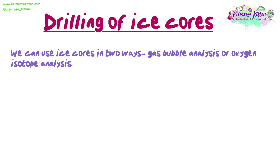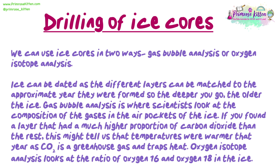Drilling of ice cores. We can use ice cores in two ways: gas bubble analysis or oxygen isotope analysis. Ice can be dated as the different layers can be matched to the approximate year they were formed — so the deeper you go, the older the ice. Gas bubble analysis is where scientists look at the composition of the gases in the air pockets of the ice. If you found a layer that had a much higher proportion of carbon dioxide than the rest, this might tell us that temperatures were warmer that year, as CO2 is a greenhouse gas and traps heat.